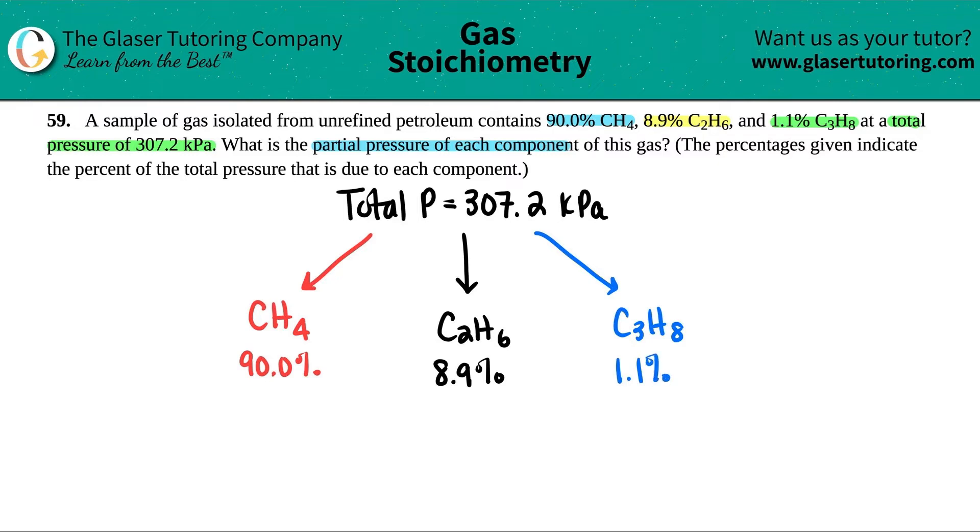Now, just to make sure that there's no hidden percentages, always just add up your percentages to make sure that it equals 100%, but in this case it does. So we have no hidden compounds that are in this gas. So now we just need to find the partial pressure of each component.